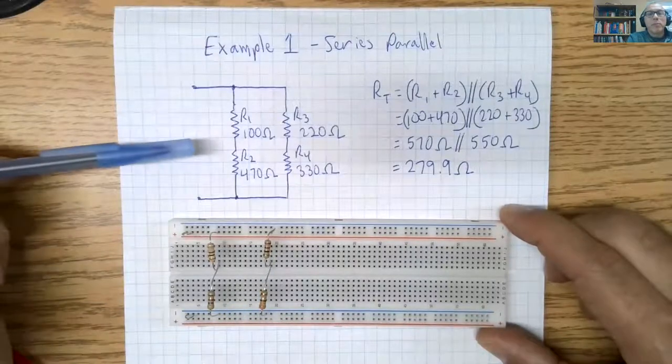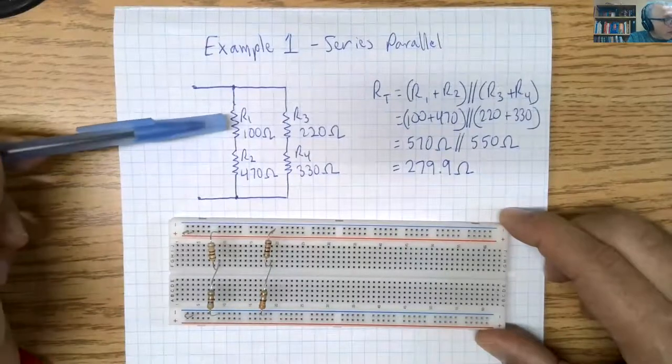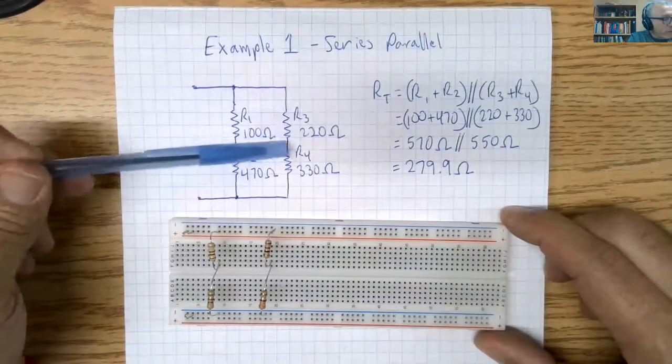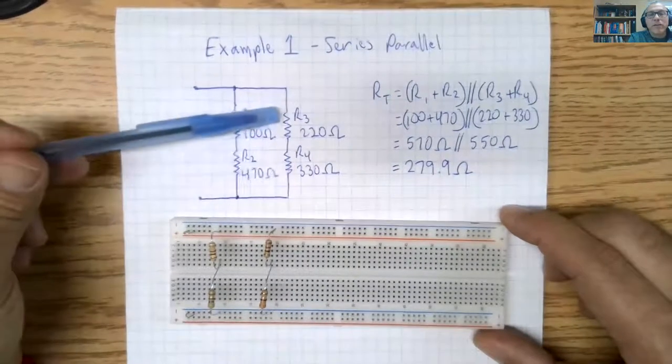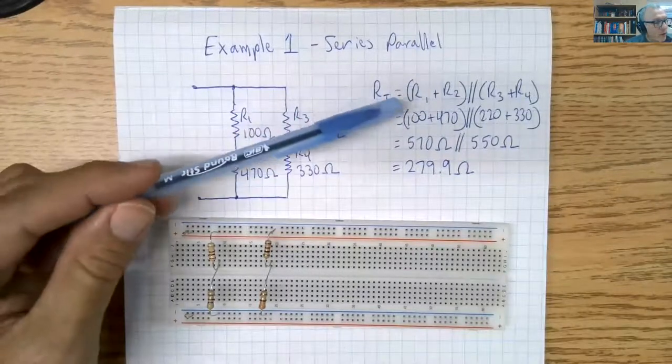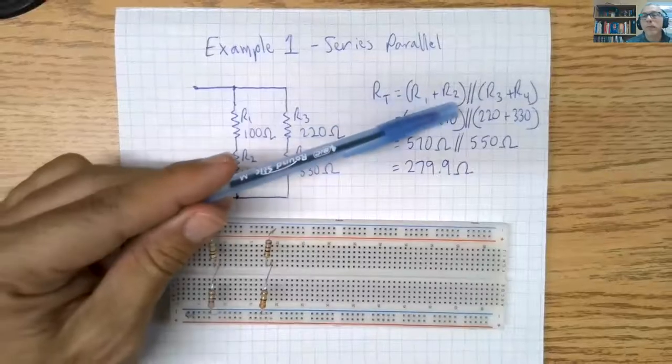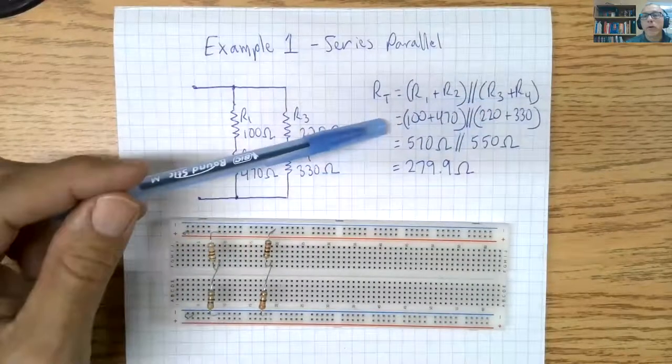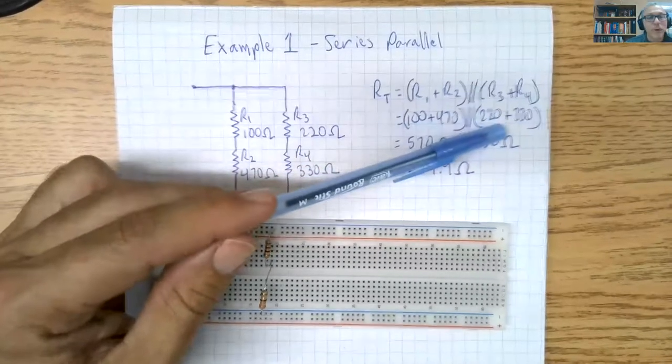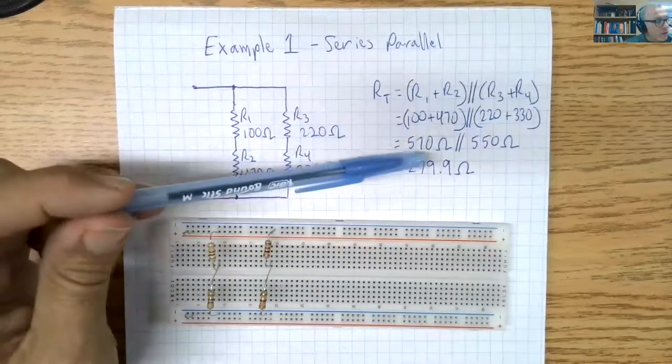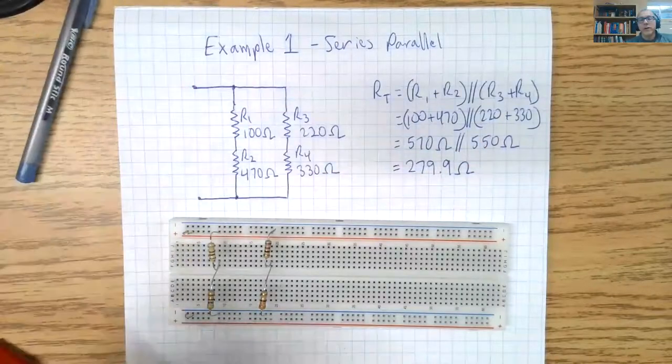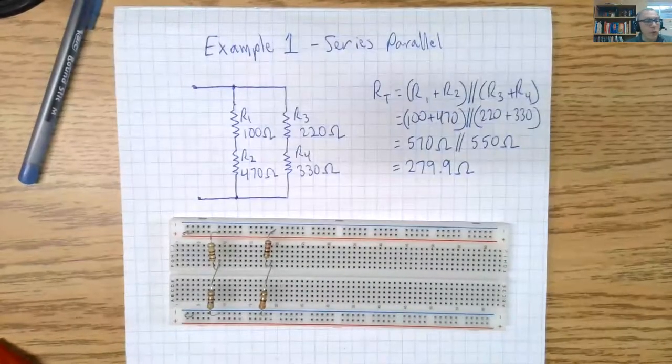So the first example I'm going to do is this one. I have R1 in series with R2 and R3 in series with R4, and this branch is in parallel with that branch. So to calculate RT, I did RT equals R1 plus R2 in parallel with R3 plus R4. So it's 100 plus 470 in parallel to 220 plus 330, which gives us 570 in parallel to 550 and RT is 279.9 ohms.